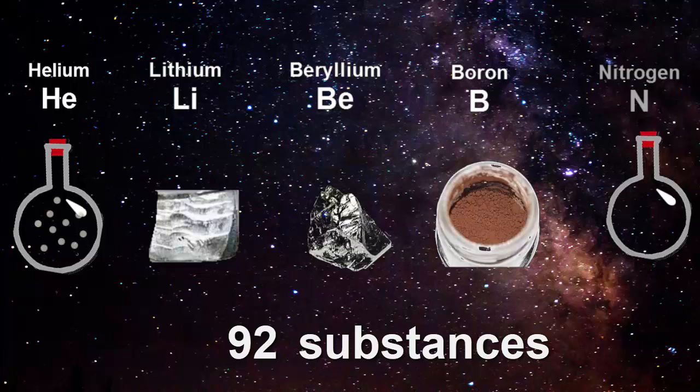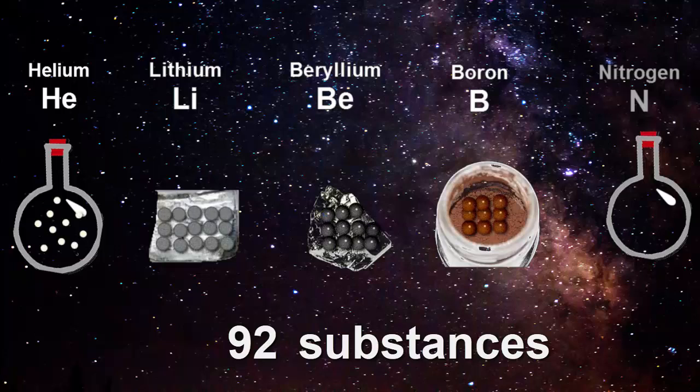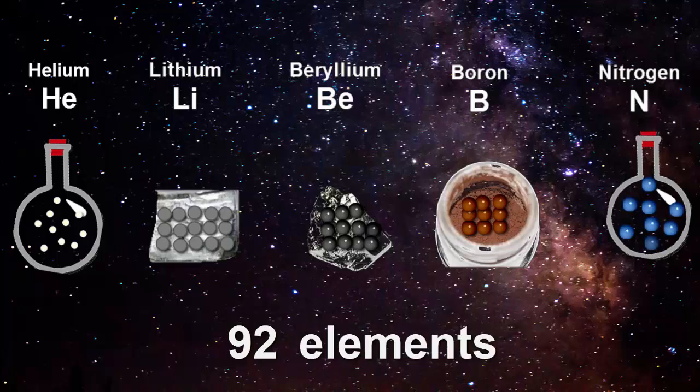We'll start with the 92 substances that we saw in the last video, each made from only one kind of atom. That means they're all elements.